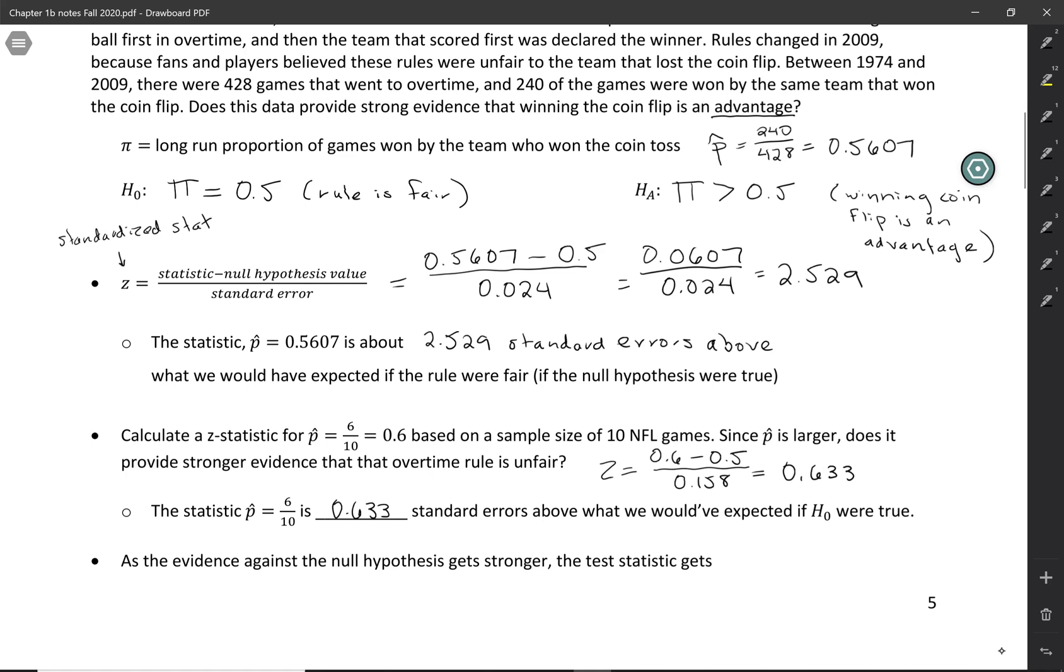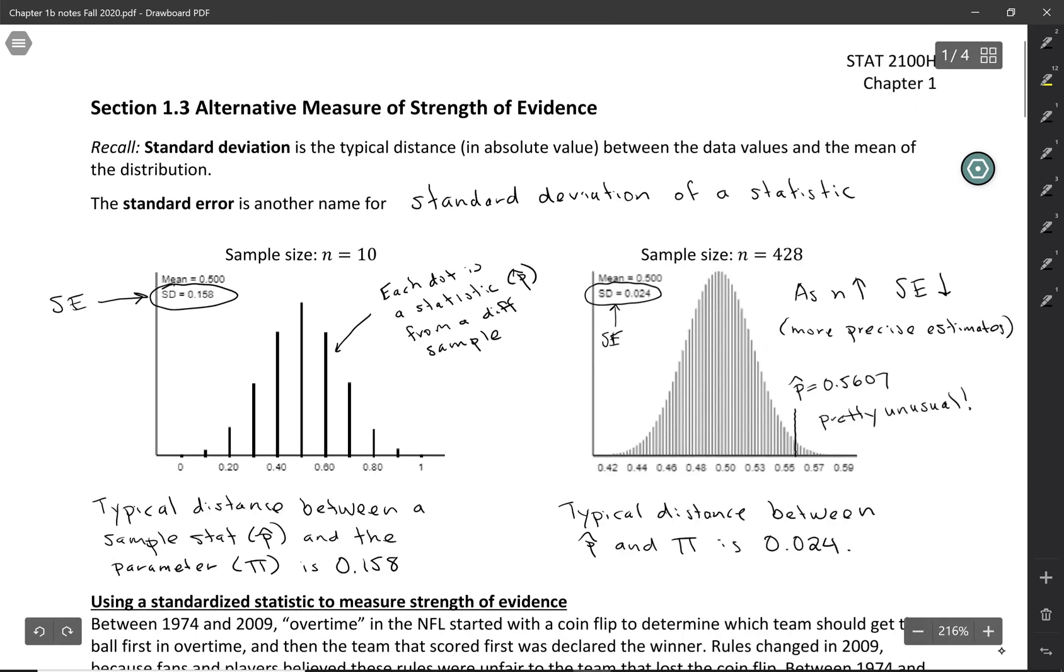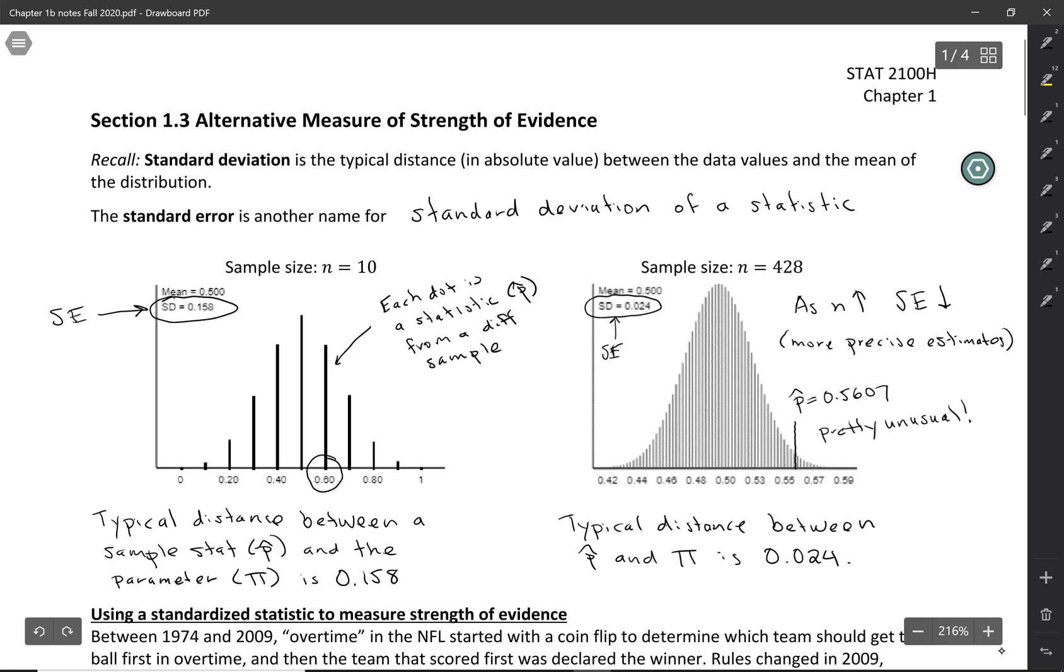This ends up giving me a z-statistic of only 0.633. In this case, the statistic is 0.633 standard errors above what we would have expected if the null hypothesis were true. If we find this on our graph, here's our 0.6. P-hat equals 0.6 is not unusual—it would be very common even if the rule were fair to see 6 out of 10 times that the team that won the coin flip won the game.